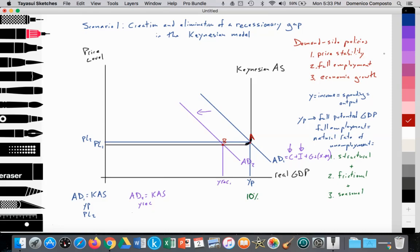We've noticed that the price level has fallen as well. So price level is at PL1. There's a fall in the price level.